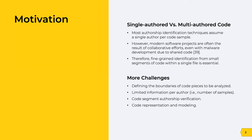Moreover, the number of contributing programmers to a single code sample can be large, and an effective multi-author identification system should be capable of identifying code authors even with a single line of code. Identifying programmers even with limited information requires powerful tools and abstraction to capture authorship attributes for accurate identification.